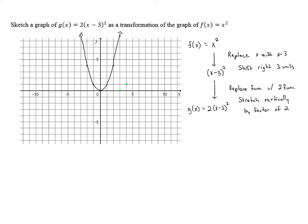And (2, 4) shifts to (6, 4) — actually that point has a y-value of 4 and moves to x equals 6. We can also move the three points on the left-hand side, shifting each to the right 3 units. Now that we've done the first transformation — shifting right 3 units — we can stretch everything vertically by a factor of 2, meaning we double the y-coordinate of each point on this intermediate graph.